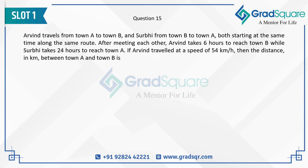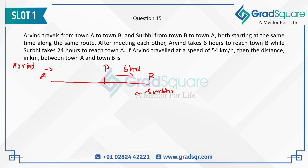Arvind travels from town A to town B, and Surabhi travels from town B to town A — two towns separated by some distance. Both start at the same time along the same route. After meeting each other at point P, Arvind takes 6 more hours to reach town B, and Surabhi takes 24 hours from point P to reach town A. Arvind is traveling at a speed of 54 km/h. What is the distance between town A and town B?